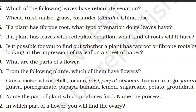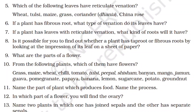If a plant has fibrous roots, what type of venation do its leaves have? Plants with fibrous roots have parallel venation in their leaves. And plants with tap roots have reticulate venation. So if a plant has fibrous roots, it will have parallel venation.